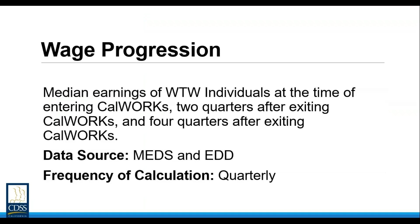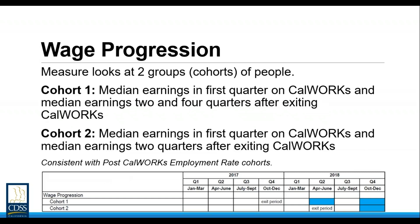Next is wage progression, which is a bit more involved. The wage progression attempts to quantify the change in median income for cohorts based on the quarter of exit from CalWORKs. The measure will be reported using the cohort median wage for three periods for cohort one and two periods for cohort two. Both cohort one and cohort two will have median wages reported for their entry quarter and six months after exit, but cohort one will also have one year after exit. This measure utilizes a match of data from MEDS and EDD and will be calculated quarterly.